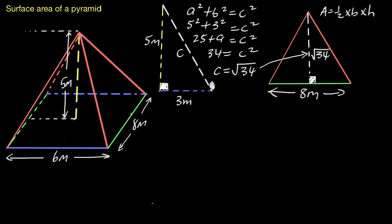We were finding the area of that triangle because we want the area of this face on the pyramid. We now have a base of eight and a height of the square root of 34. So the area is half times eight times the square root of 34. We'll stop right there — we can use this at the very end to calculate our surface area by entering it into the calculator.